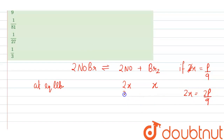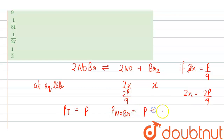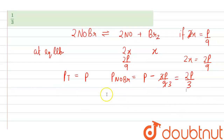The total pressure is equal to p, and the pressure of NOBr will be equal to p minus 3p/9, which equals 2p/3.